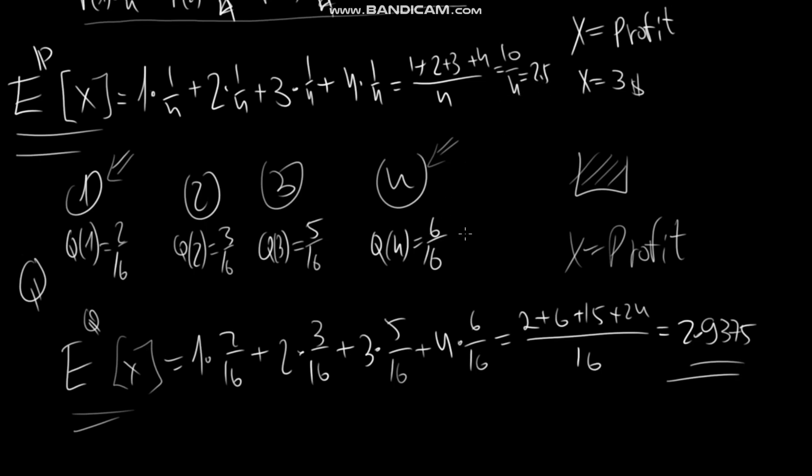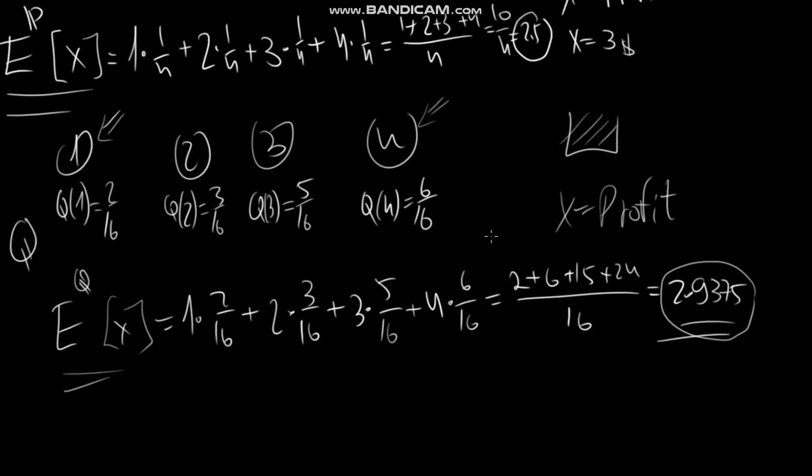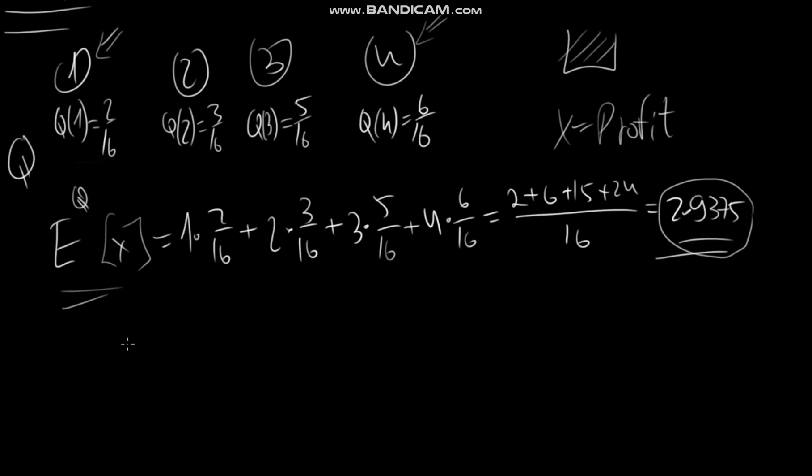And again, when I'm saying measure, I only mean these new probabilities. So how can we connect this expectation under P and this expectation under Q? This is what we call the Radon Nikodym derivative.